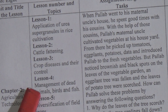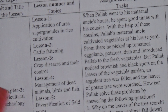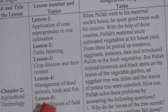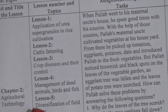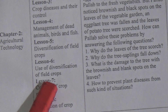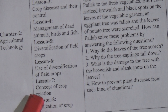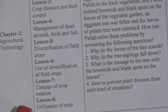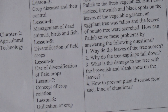Lesson 4 is management of dead animals, birds, and fish. Lesson 5 is diversification of field crops. Lesson 6 is the use of diversification of field crops. Lesson 7 is the concept of crop rotation. Lesson 8 is utilization of crop rotation.